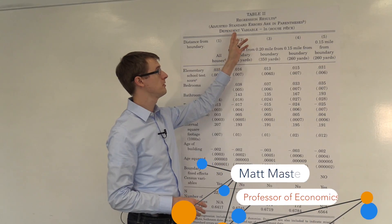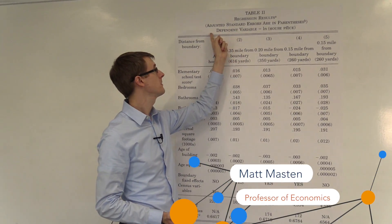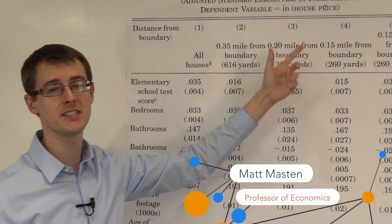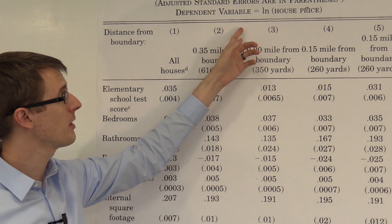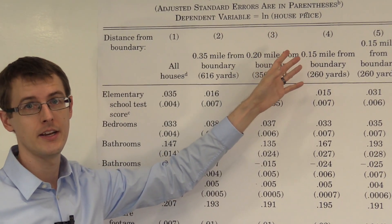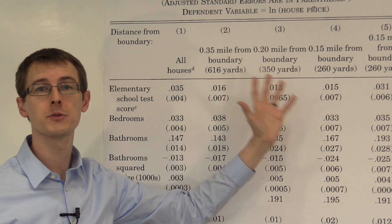Here are the results. Table 2, regression results. Adjusted standard errors are in parentheses, as usual. Our dependent variable is log house prices. So that's what we're trying to explain.